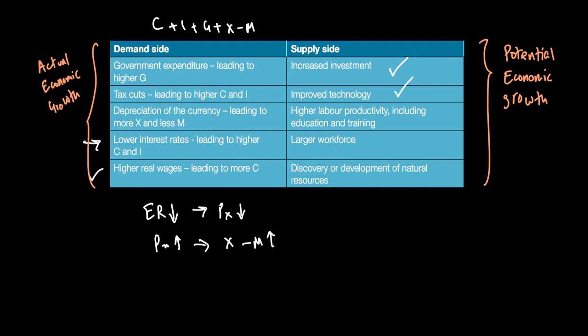Improvement in technology will result in higher productivity for workers who are now using better technology, and that can cause economic growth. Similarly, higher labor productivity, including education and training, are all supply-side policies that can make our quality of factors of production go up and therefore our PPC shift to the right or LRAS shift to the right.